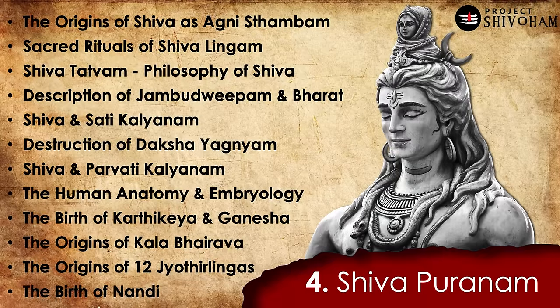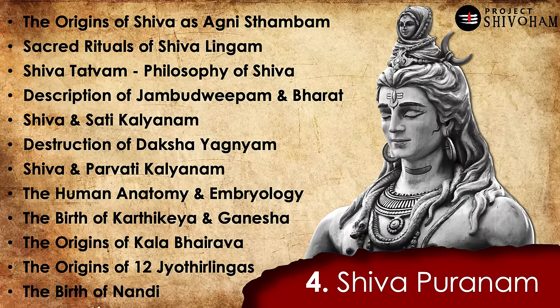Number 4, Shiva Puranam: it illustrates the origins of Shiva in the form of Agnistambham and the conflict between Sri Mahavishnu and Brahma. It discusses the sacred rituals of Sivalingam, the Shiva Tatvam philosophy, geography of Jambudvipam, Shiva and Sati Devi Kalyanam, destruction of Dakshayagnam, Shiva and Parvati Kalyanam, and — very remarkably — the human anatomy and embryology, with a detailed biological and embryological account of the development of the human fetus month by month in the womb. It also covers the birth of Kartikeya, Ganesha, Kalabhairava, 12 Jyotirlingas, and Nandishwara.